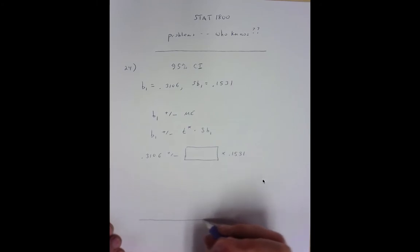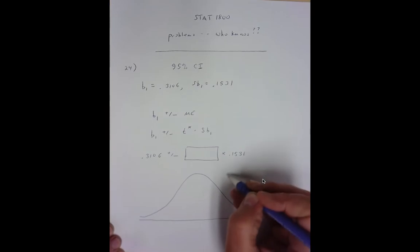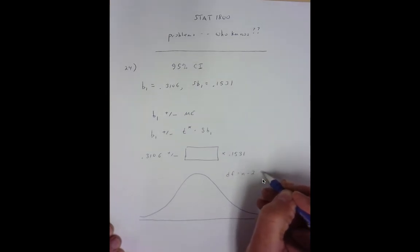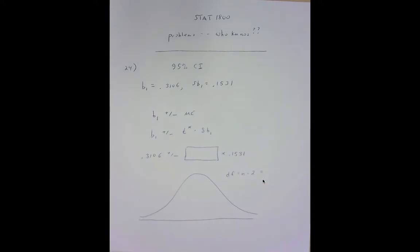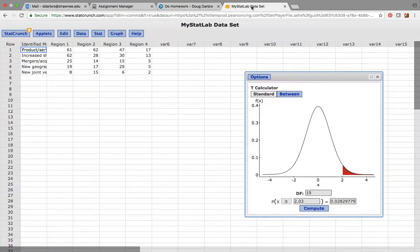So I need to find this. And what I do here is I look at the t-distribution. Degrees of freedom will be n minus two. So our sample size, I think it was 21, so we're going to be looking at degrees of freedom equal to 19.